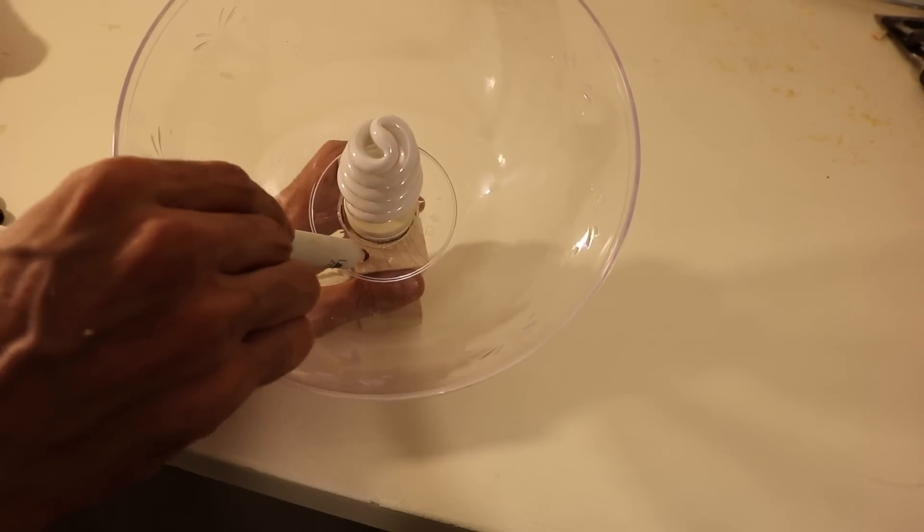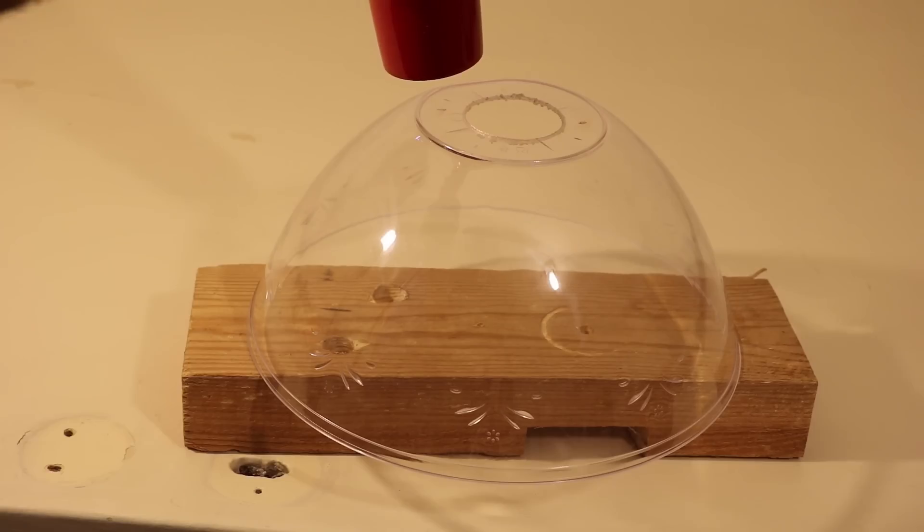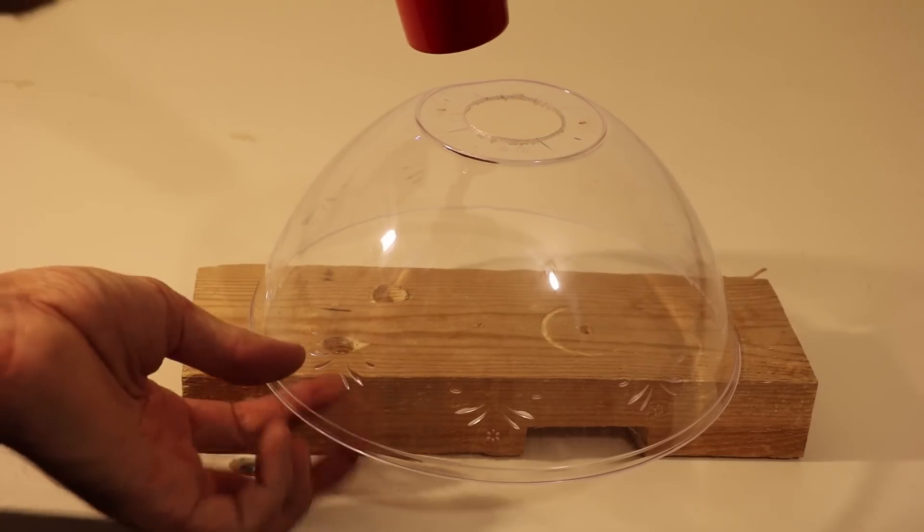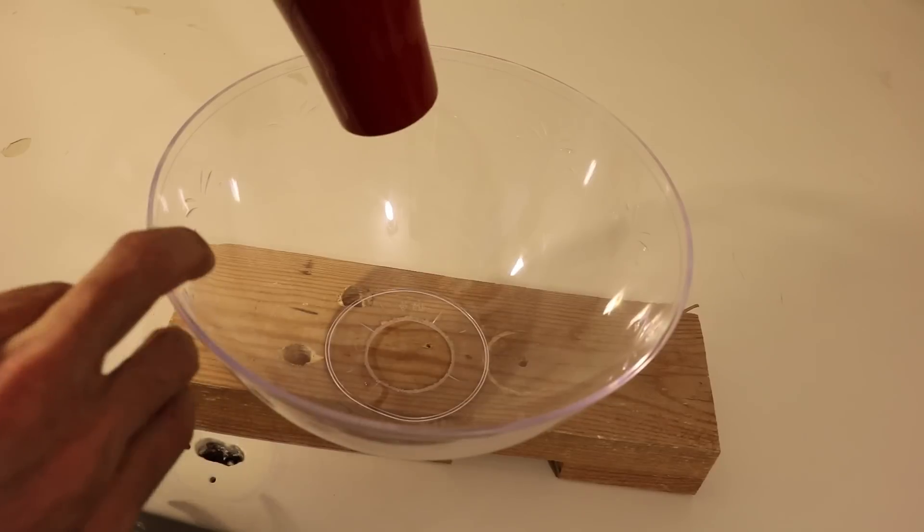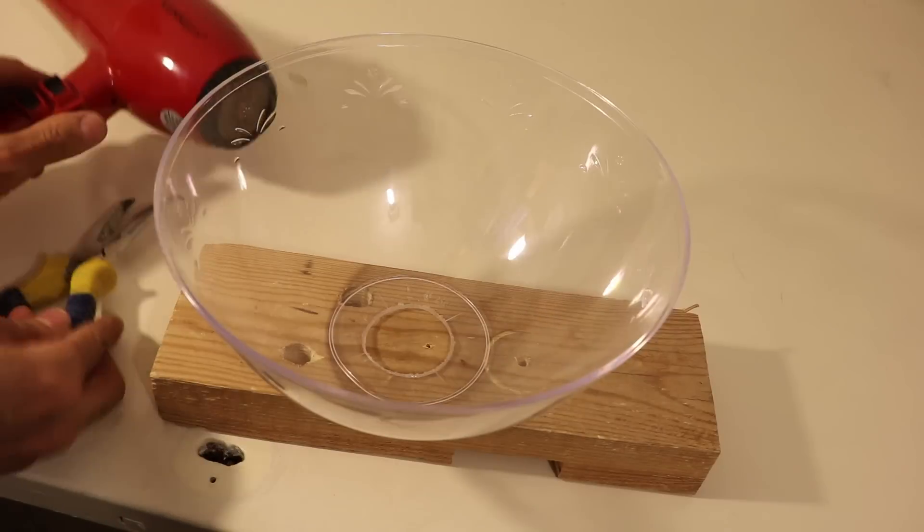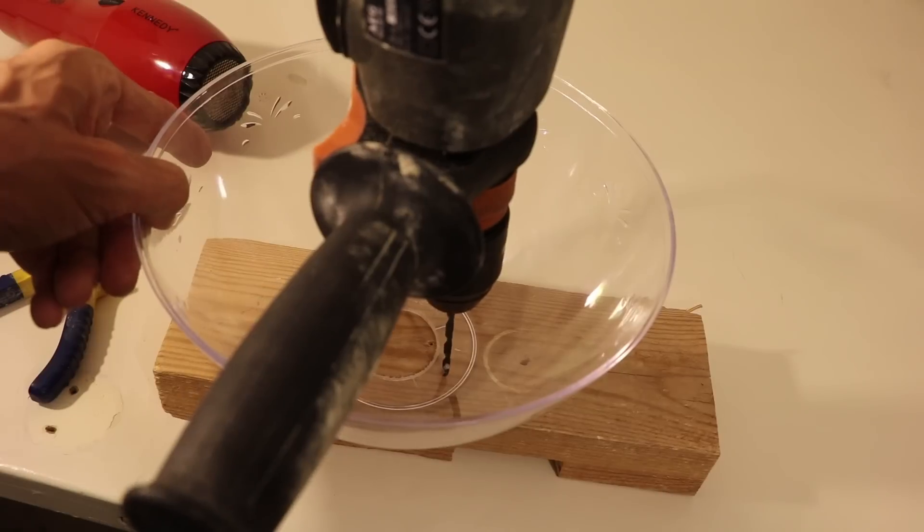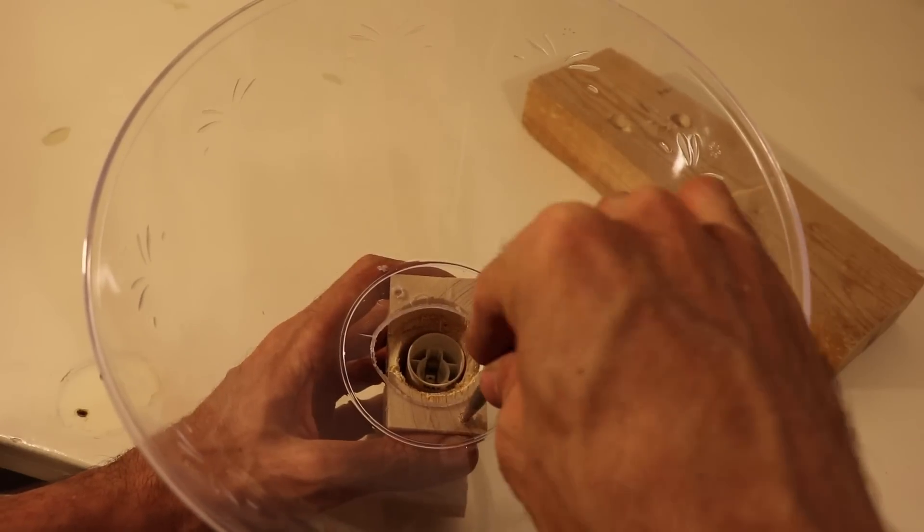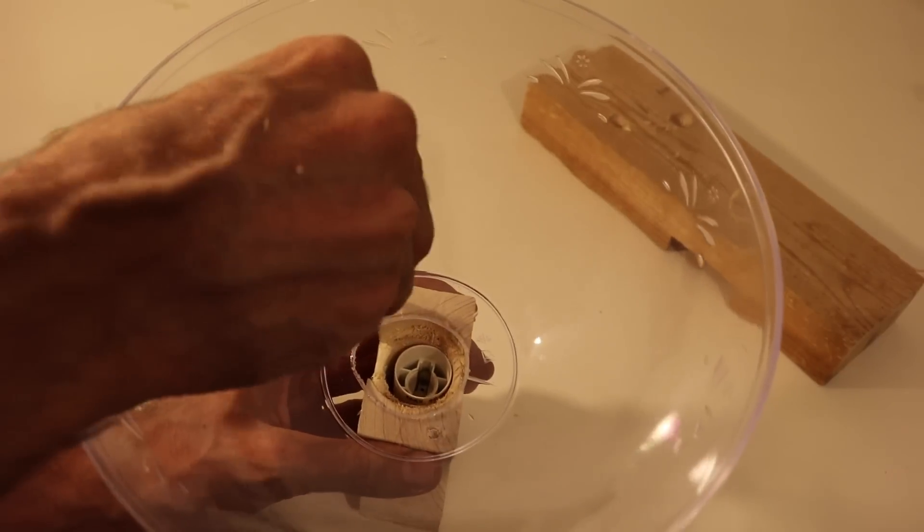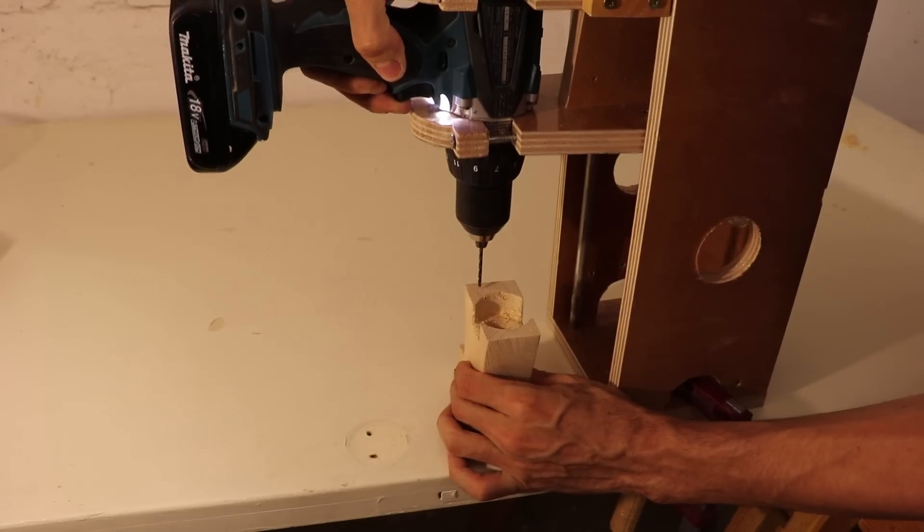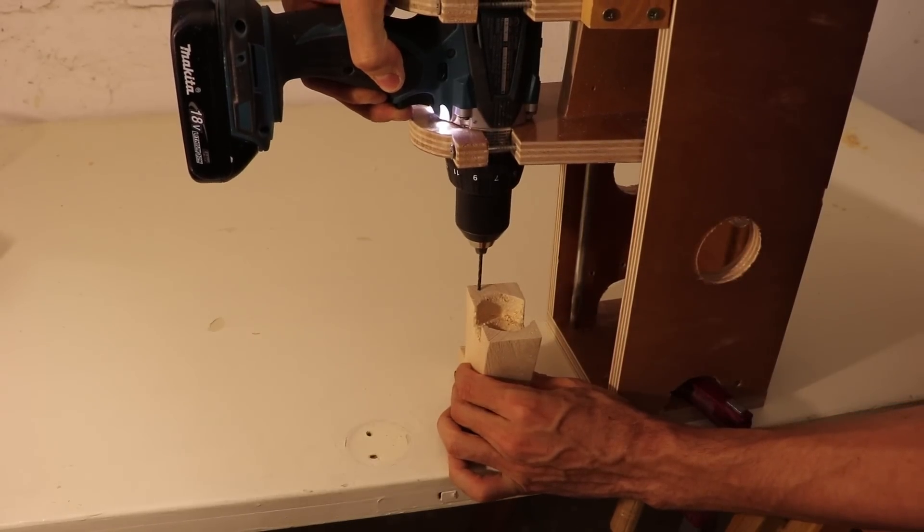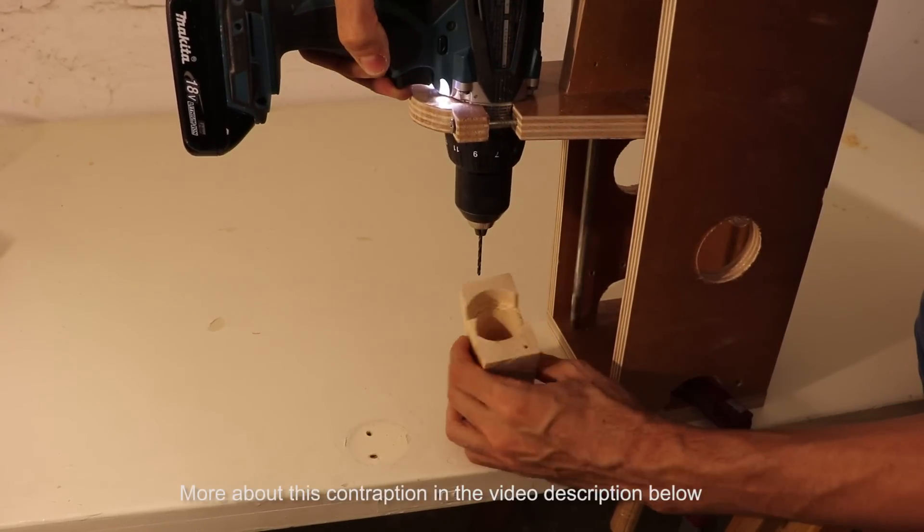I could then use the same procedure of heating the bowl with the hair dryer to make a couple of holes for the mounting screws. I then used my homemade temporary drill piece in order to guide the drill as I made the holes.